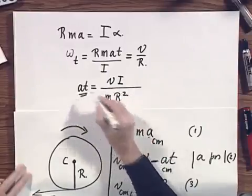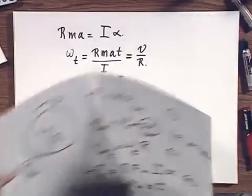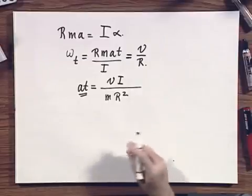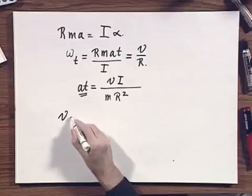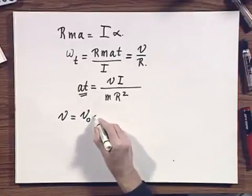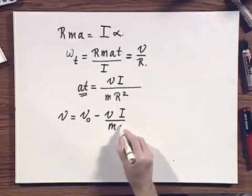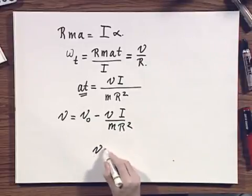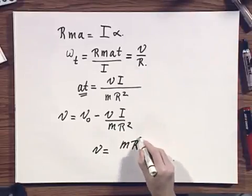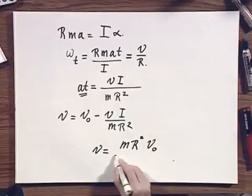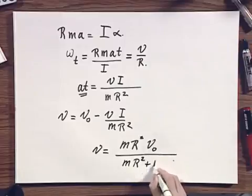And this AT I'm going to substitute now into this equation. And I think I have done the job. It was a lot of massaging, and it was a lot of work, but I think it will work. V equals V zero minus V times I divided by M R squared plus V. And so I find then that V, the final velocity of the plane, equals M R squared times V zero divided by M R squared plus I.